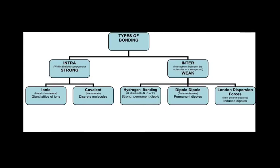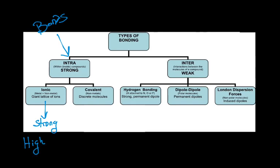Let's start with a quick graphic overview of bonding types. On the left we have what we call intramolecular forces — your basic bonds: ionic and covalent. Ionic bonds are the stronger of the two bonds, very strong, with very high melting points and boiling points. Covalent bonds are weaker than ionic bonds, with lower melting and boiling points.